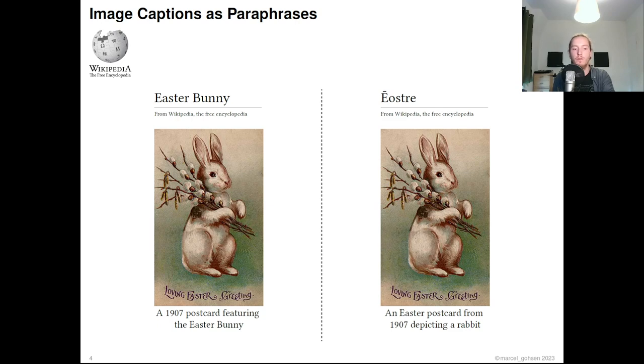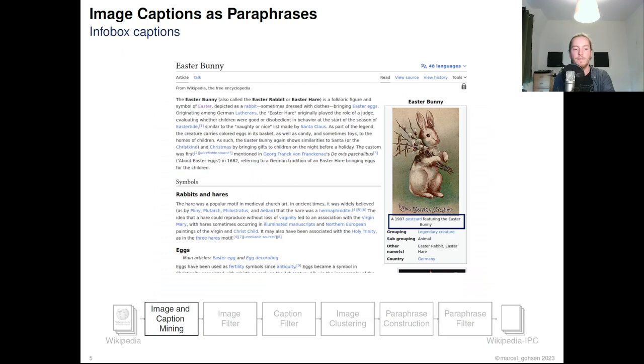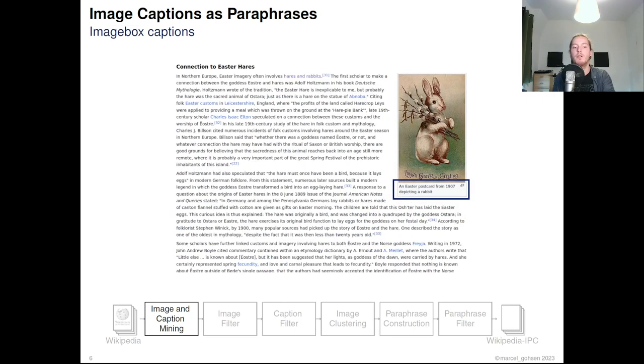As a proof of concept, we use Wikipedia to construct a dataset consisting of caption pairs that form paraphrases. Images in Wikipedia very often have captions. Captions can appear in the info box of an article, in an image box within an article, and in many other places. We have tried to cover as many cases as possible to have as many captions as possible at our disposal.